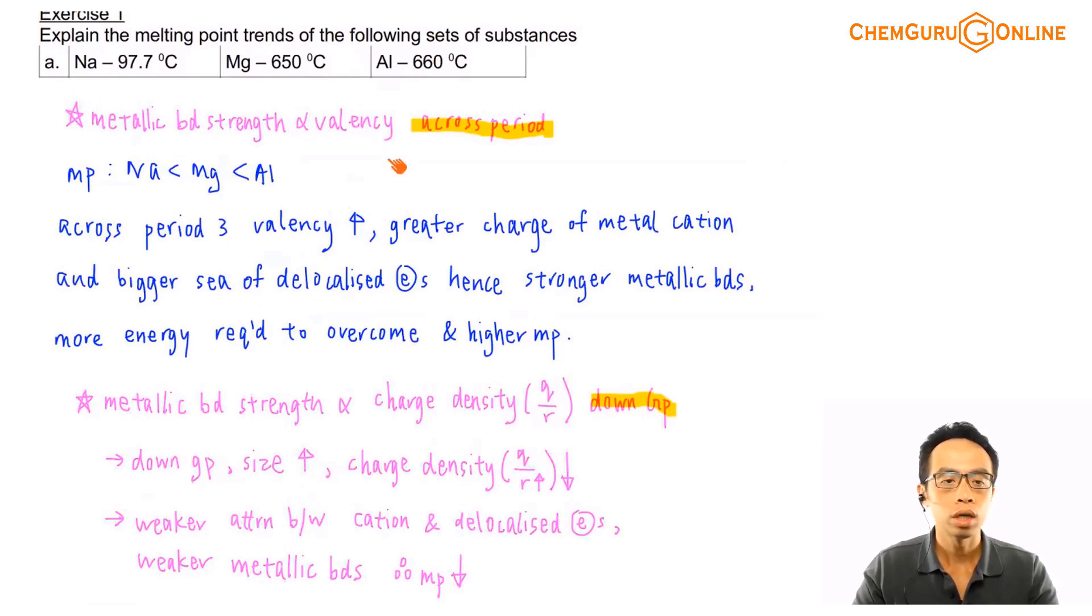Exercise 1 is comparing melting point for these 3 metals: sodium, magnesium, and aluminum. We have talked about it earlier involving valency, metallic bond strength linked to valency, and this is across the period.